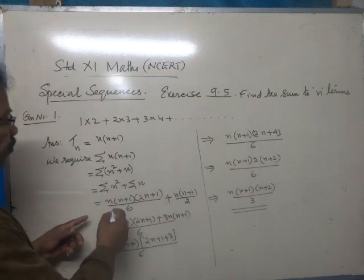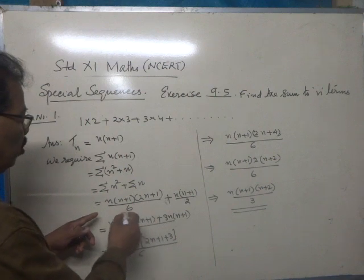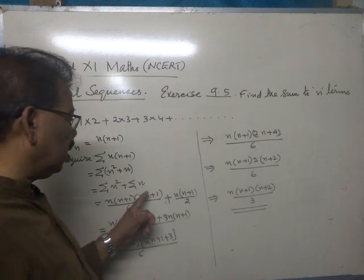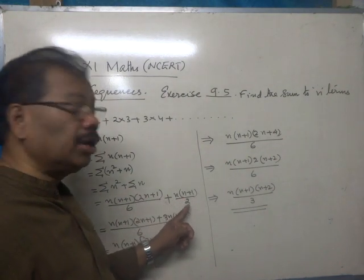Sum of the squares of the first n natural numbers is given by the formula n(n+1)(2n+1)/6, and the sum of the first n natural numbers is given by n(n+1)/2.